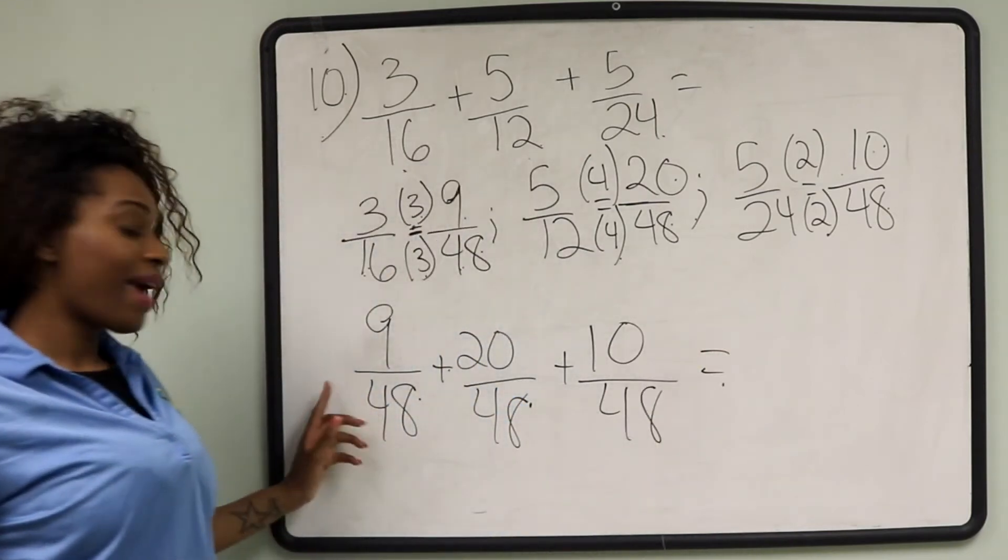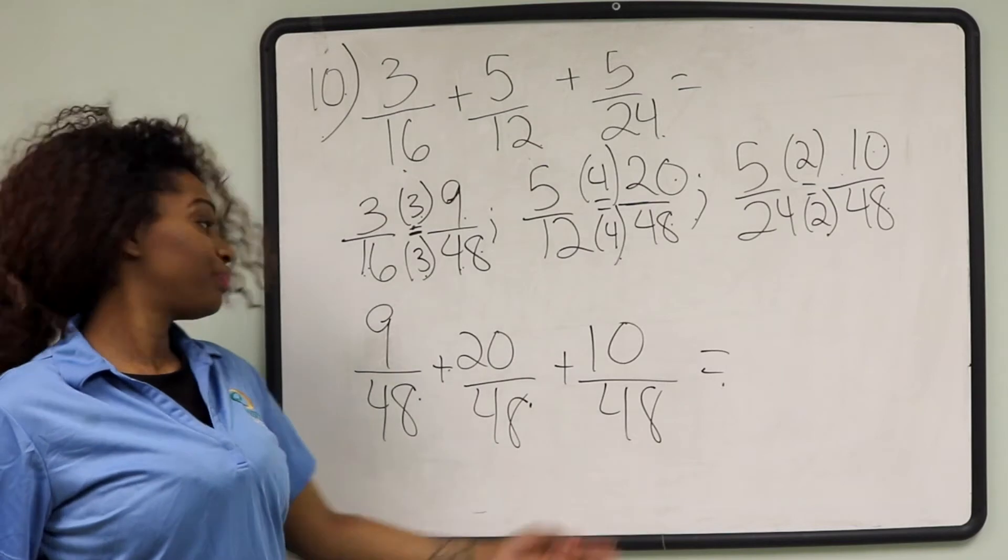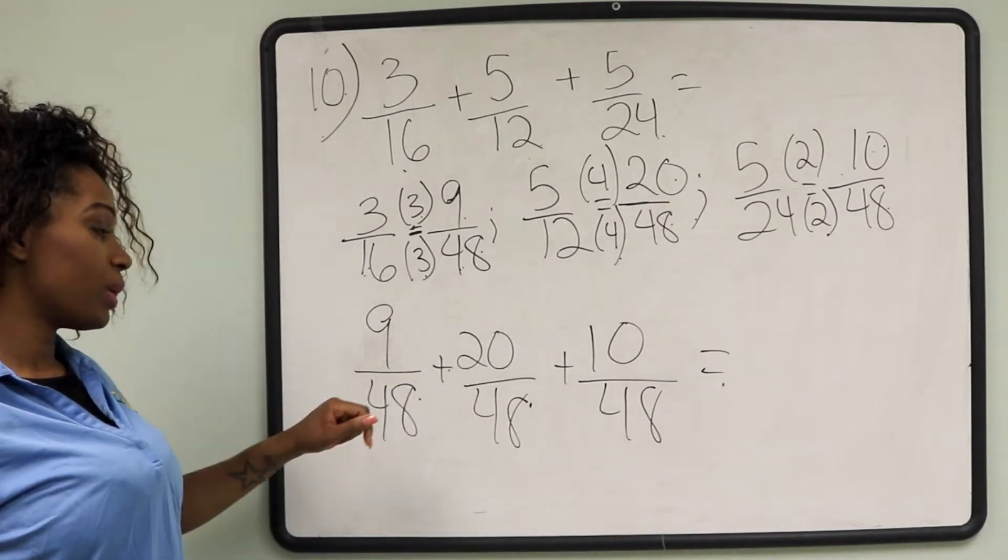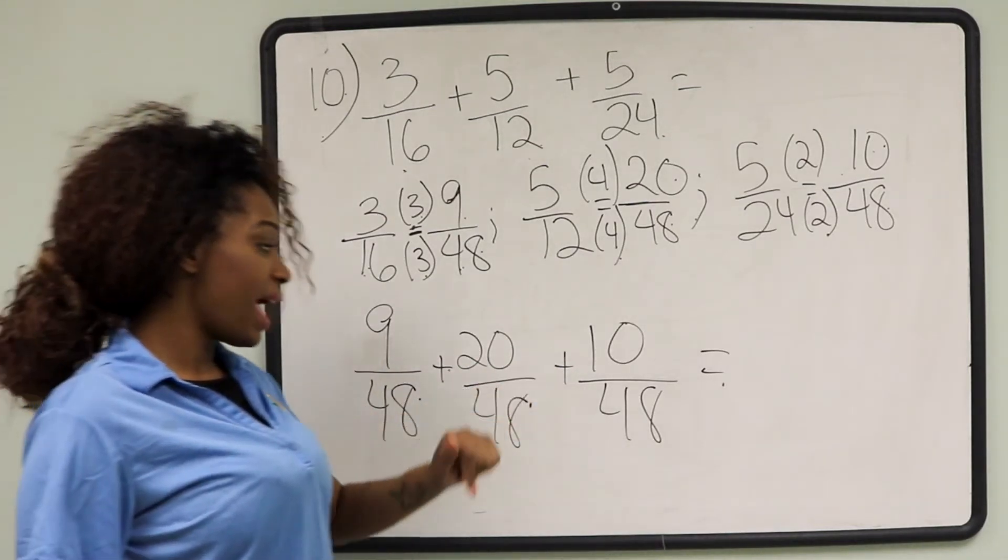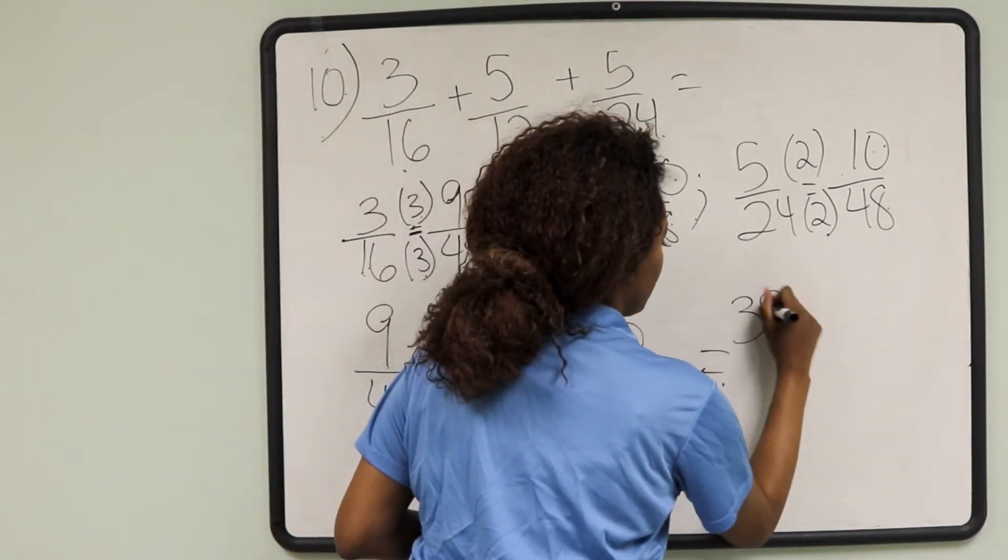Now we're ready to add because all of our denominators are the same. 9 plus 20 is 29, plus 10 is 39. So our answer is 39 over 48.